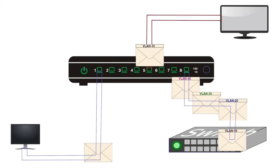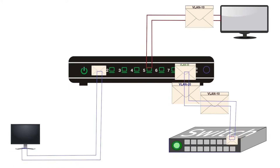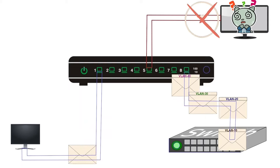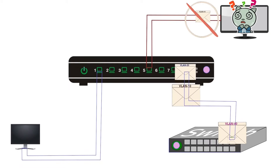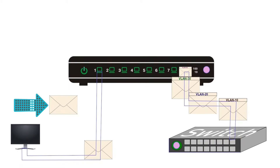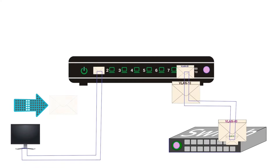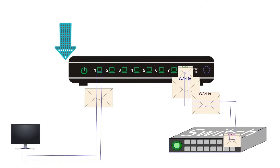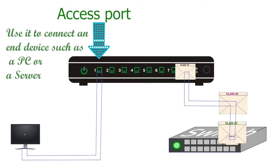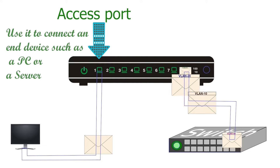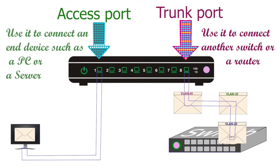If we connect an end device with a trunk port, the end device will receive frames with VLAN information. Since an end device does not understand frames containing VLAN information, it drops them. An end device will accept frames only when it receives them in their original format. An access port forwards frames in their original format, so we always connect an end device only with an access port. We use a trunk port to connect the switch port with another switch or a router.